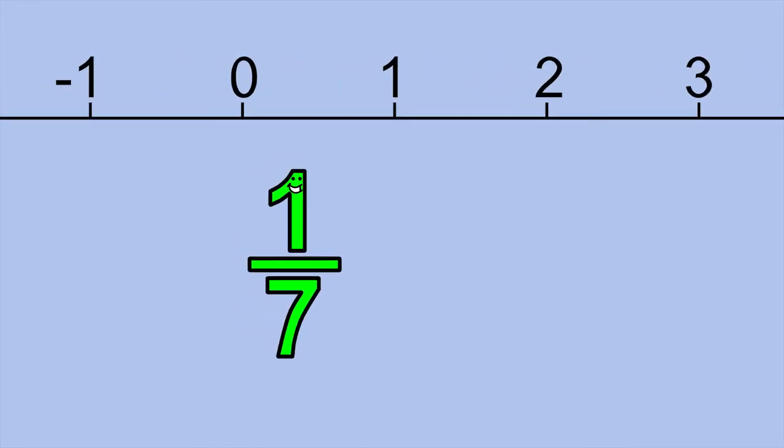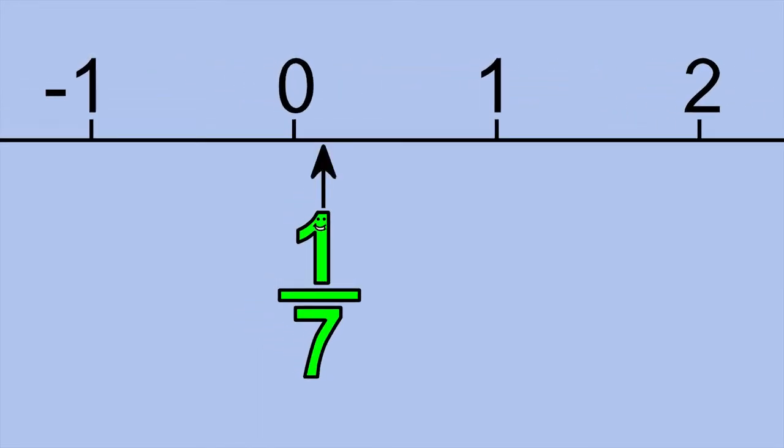You can find me on the number line between 0 and 1. If you divide the line segment between 0 and 1 into 7 equal sized parts, I'm at the end of the first part.